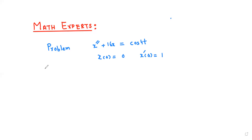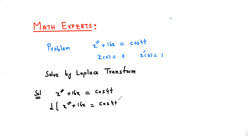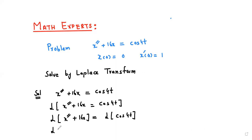We can solve this by using the Laplace transform. The given equation is x double prime plus 16x equals cos(4t). We apply the Laplace transform on both sides: Laplace transform of x double prime plus 16x equals Laplace transform of cos(4t). Applying the Laplace transform individually to each term gives: L{x''} + 16·L{x} = L{cos(4t)}.